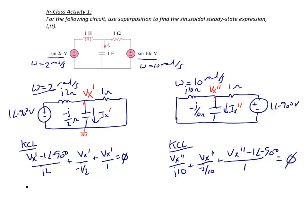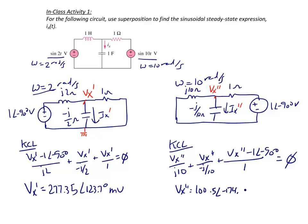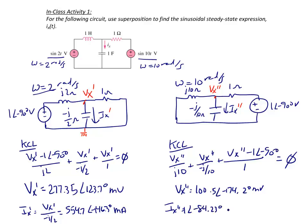With one equation and one unknown in each circuit: Vx prime equals 277.35∠123.7° millivolts, and Vx double prime equals 100.5∠−174.2° millivolts. Ix prime equals Vx prime divided by (−J/2), giving Ix prime = 554.7∠−146.3° milliamps. Ix double prime equals 1∠−84.23° milliamps.